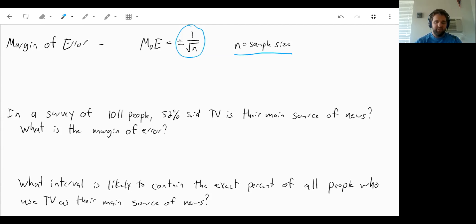So for example, in a survey of 1,011 people, 52% said that TV is their main source of news. What is the margin of error for this survey? Well, we need the number of people in our sample, which is 1,011. So it's going to be plus or minus 1 over the square root of 1,011. Well, if we type that into our calculator quick, 1 over the square root of 1,011, that will come out to plus or minus 0.0314. Or this is as a decimal. If you want it as a percent, it would be plus or minus 3.14%.